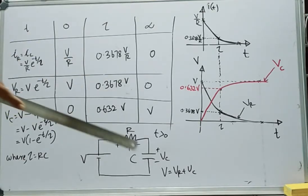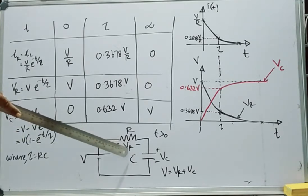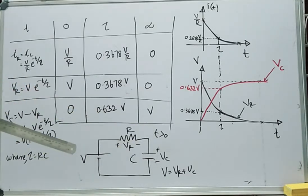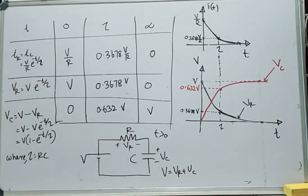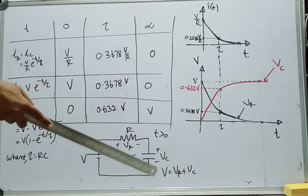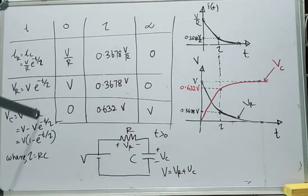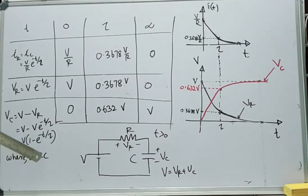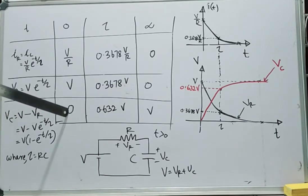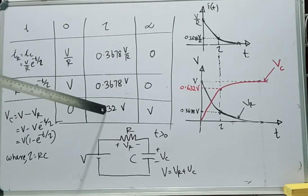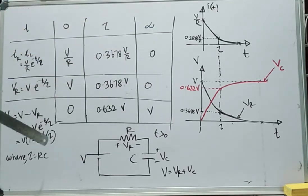Now we need to find out the voltage across the capacitor VC. Considering this equivalent circuit for T greater than 0 and applying KVL, we can write V equals VR plus VC, where VR is the voltage across the resistor and VC is the voltage across the capacitor. So VC equals V minus VR. Substituting VR as V times e raised to minus T/tau, we get VC equal to V times (1 minus e raised to minus T/tau), where tau equals the time constant RC. Substituting T equal to 0 gives VC equal to 0. At tau, its value is 0.632 V. At infinity, its value is V.